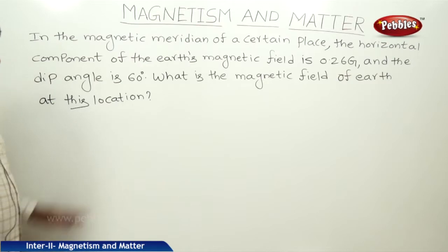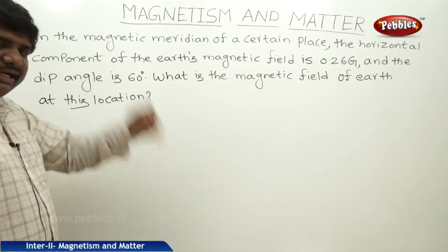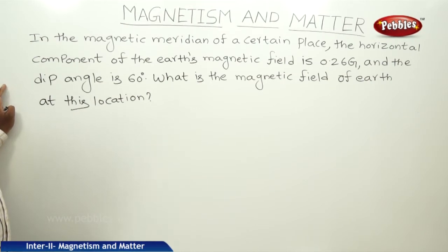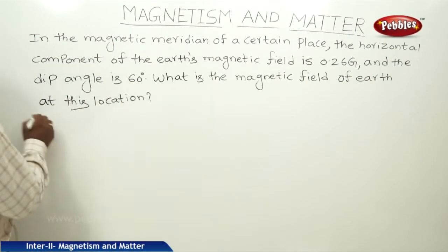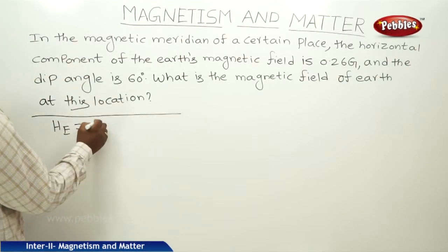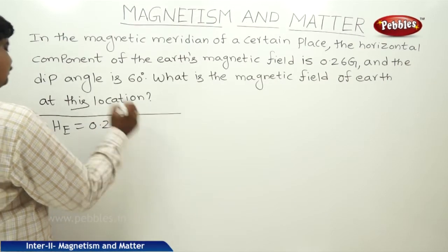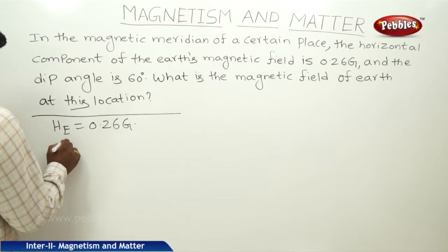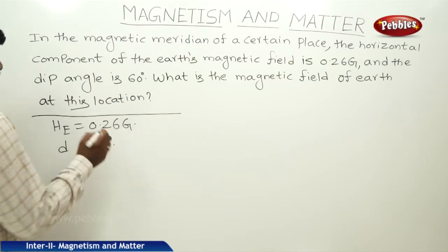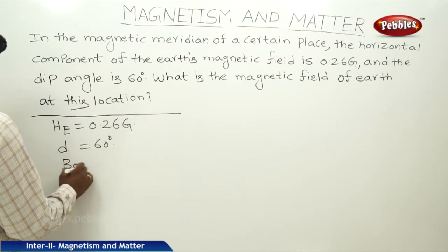Now, here is a numerical problem based on the concept of Earth's magnetic components. In the magnetic meridian of a certain place, the horizontal component of the Earth's magnetic field is 0.26 Gauss and the dip angle is 60 degrees. What is the total magnetic field of Earth at this location?